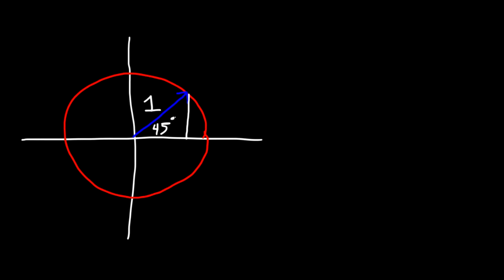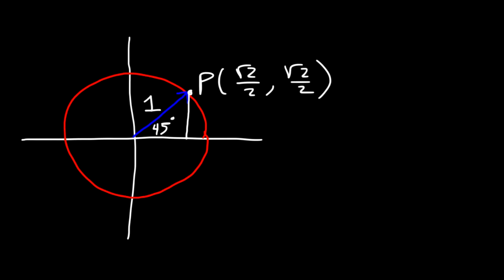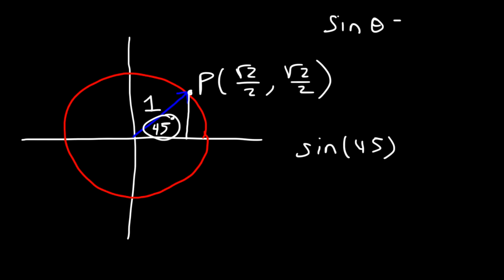At a 45 degree angle, the x and y portion of the triangle have the same value. So the point occurs at root 2 over 2, comma, root 2 over 2 — the x and y values are the same. Now you want to know these values because, let's say, if you wish to find sine of 45 degrees. Sine theta is equal to the y value of this point in the unit circle.